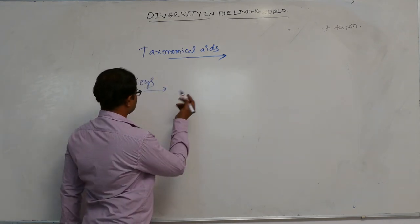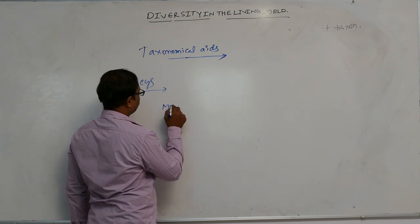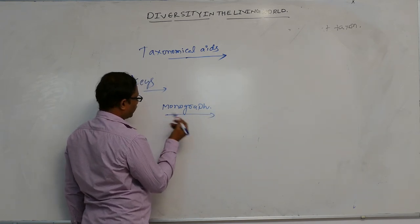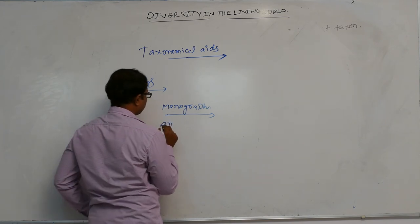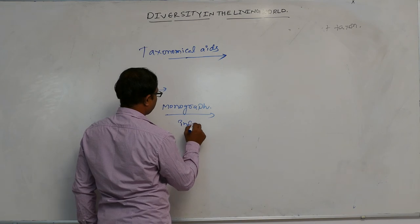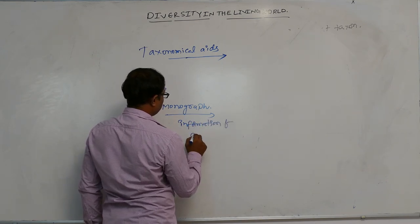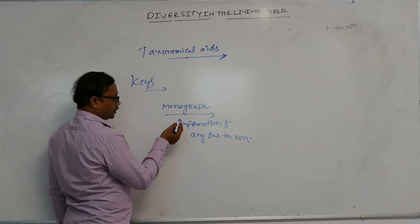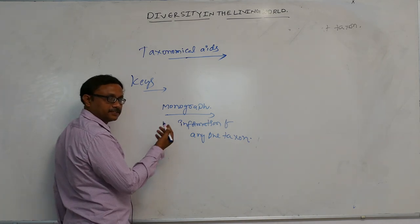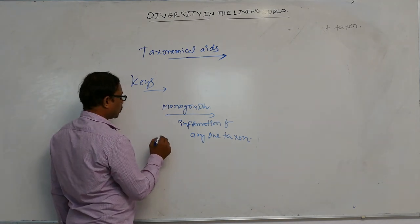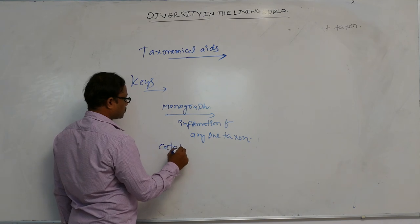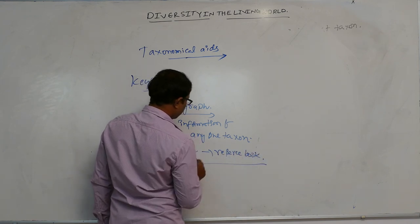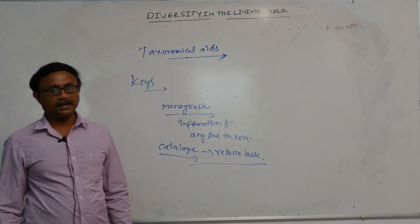Monograph contains information of any one taxon — for example, a species or genus. Catalogs are reference books. Monograph, catalog, flora, and manual are all examples of taxonomical aids.